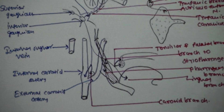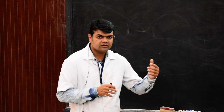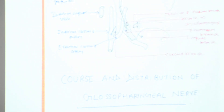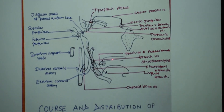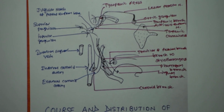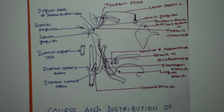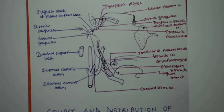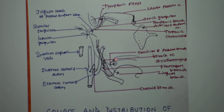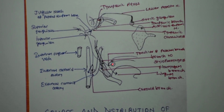It passes between the superior and middle constrictor muscles because it has to enter inside the pharyngeal cavity to supply the important structures there. It gives sensory branches to the soft palate and tonsil. It is the sole nerve supply to the soft palate and tonsil. So inside the pharyngeal cavity it supplies the soft palate and tonsil.